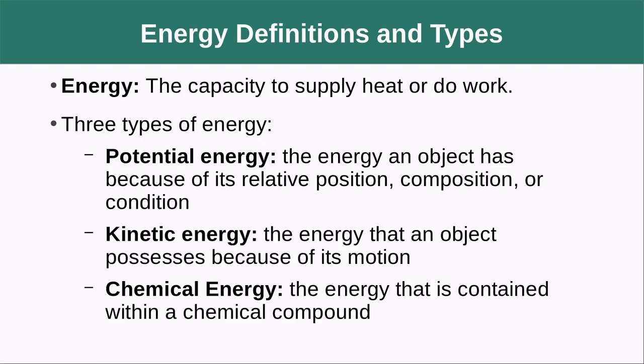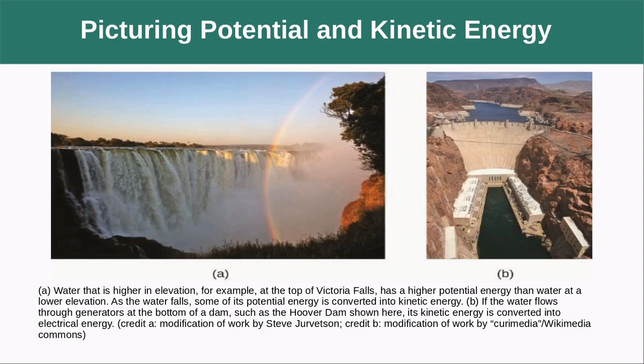A bowling ball dropped from three feet is going to have a lot less energy than a bowling ball dropped from the top of a skyscraper. Kinetic energy is the energy that an object possesses because of its motion — a baseball rolling across the grass doesn't have as much energy as a fastball thrown at 100 miles an hour. Chemical energy is the energy contained within a chemical compound that gets released, like our match example.